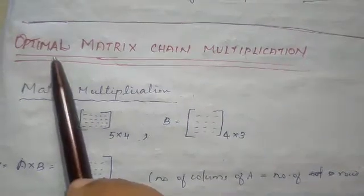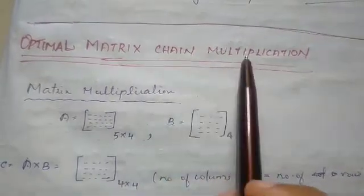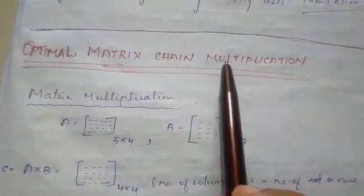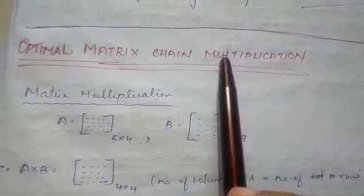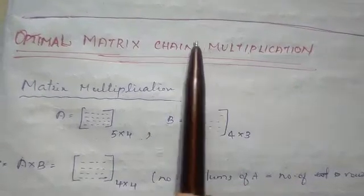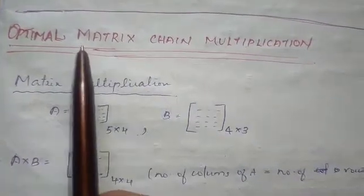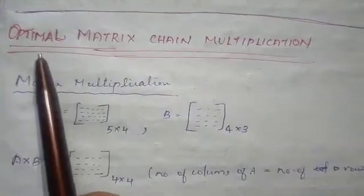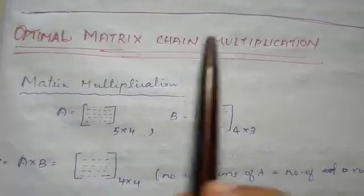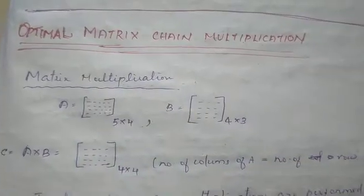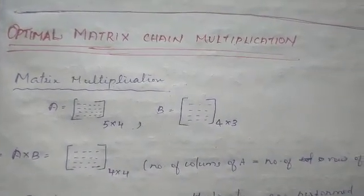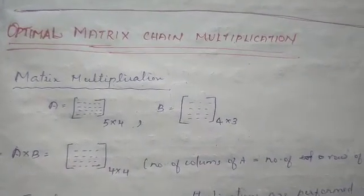Next we will look at optimal matrix chain multiplication. We are going to learn how to do dynamic programming. Dynamic programming is based on the principle of optimality. We are going to perform matrix chain multiplication using dynamic programming.